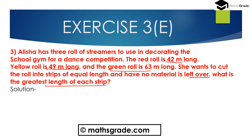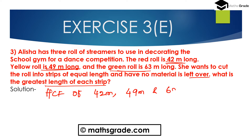We are given: red roll is 42m long, yellow roll is 49m long, and green roll is 63m long. We have to find the greatest length, that is the HCF — Highest Common Factor — of the numbers 42, 49, and 63. So we need to find the Highest Common Factor of 42m, 49m, and 63m.